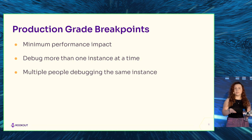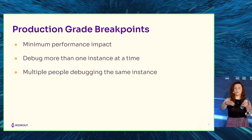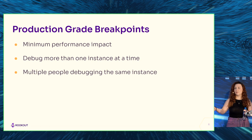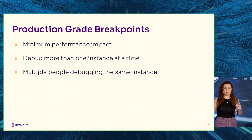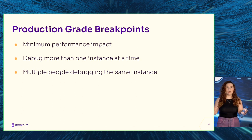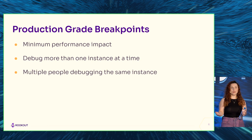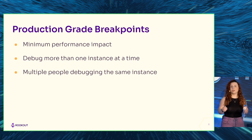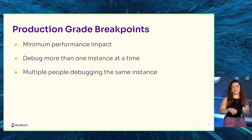The thing we do differently at Rookout is that we do this for production, and that adds a few new criteria. The first is that we want minimum performance impact. If collecting all your local variables and a stack trace takes one second, that's a lot of time, and no one wants to put that kind of latency in their production servers. The second is that we want to debug more than one instance at a time - you probably have more than one instance of your production app running, and you might not know which pod is handling the request you want to debug.